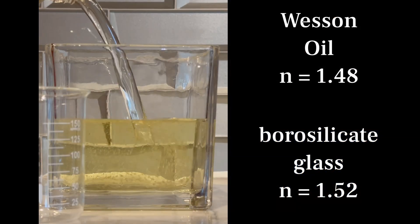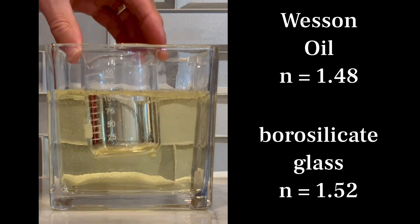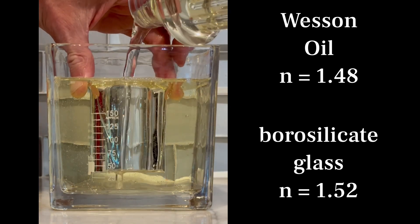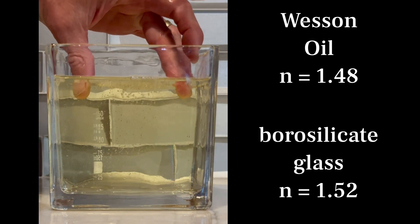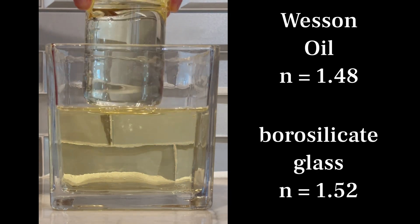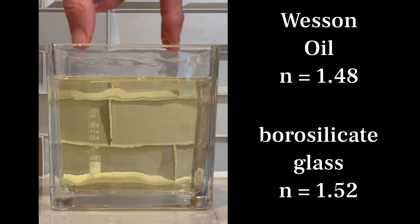This is the same effect that's observed in the disappearing beaker experiment, where oil is poured into a beaker submerged in vegetable oil. On doing so, it looks like the beaker disappears. This happens because the index of refraction of the oil and the beaker are nearly identical.